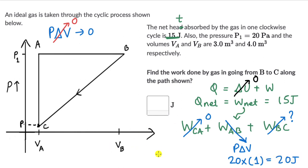So net work done that is 15, this is equal to work done in the process AB which came out to be 20 plus work done in the process BC, something that we need to figure out. And this comes out to be equal to minus 5 joules. So work done by the gas in going from B to C is minus 5 joules.